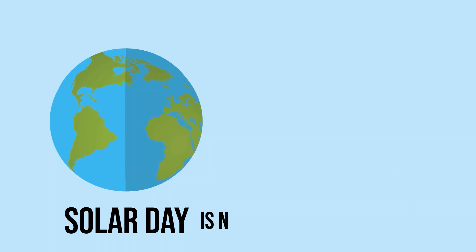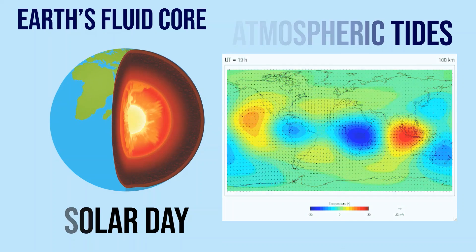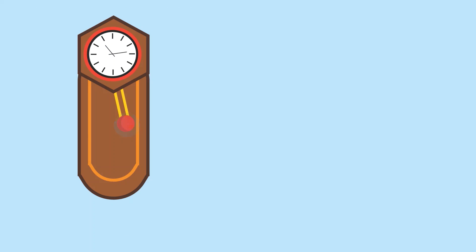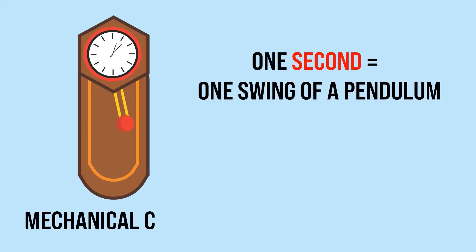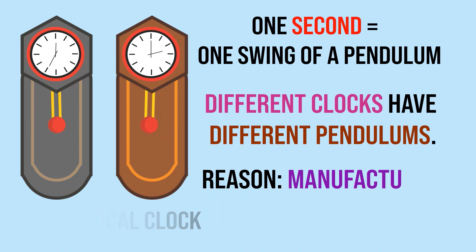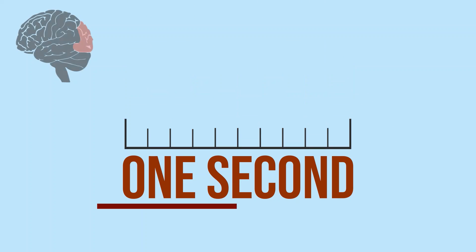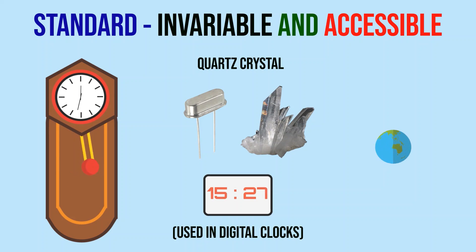However, the duration of a day varies due to atmospheric tides and Earth's fluid core. Alternatively, one can define one second as one swing of a pendulum in a mechanical clock, but different clocks may have different pendulums due to manufacturing errors. Moreover, we would like to divide time into much smaller intervals to measure even fractions of a second. What could be used as a standard that is invariable and accessible to everyone — something more accurate than pendulums, quartz crystals, or Earth's rotation?